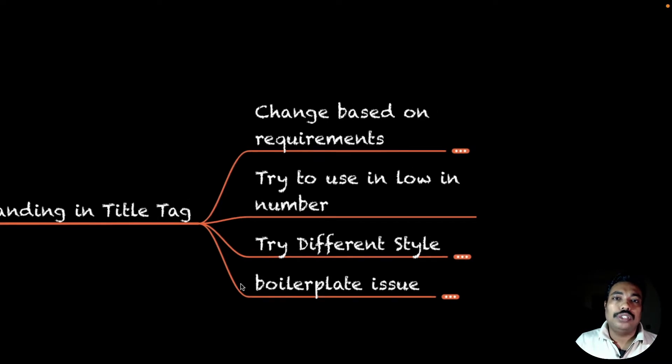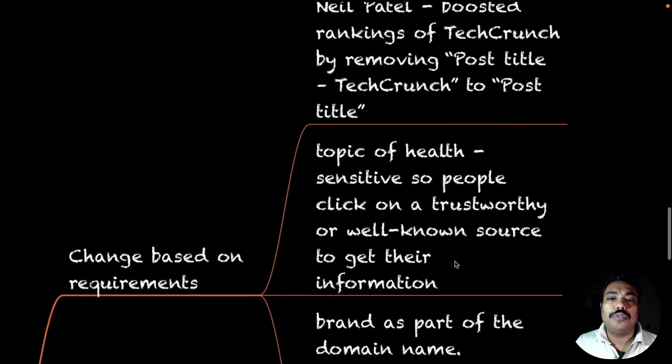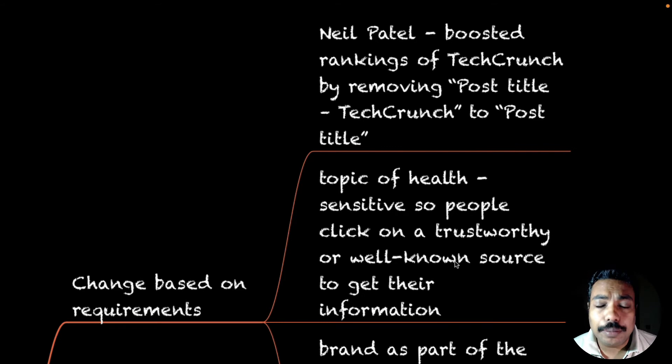This is basically a change based on requirements. For the first example, I read somewhere that Neil Patel was doing TechCrunch SEO. What he did was very simple. In WordPress, we use a brand name in the title tag. All articles published had the title tag with brand name. He removed that, and their ranking boosted. He removed TechCrunch from the title and got good results.